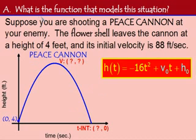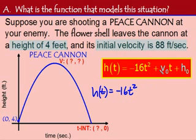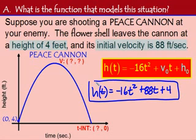Now to answer question A. What is the function that models this situation? I'm going to use my projectile motion equation and substitute my values in for v-naught and for h-naught. Reading through my problem again, I know that my initial velocity, or my v-naught, is 88 feet per second. And I know my initial height, or my h-naught, is 4 feet. So now it's just a matter of substituting into my projectile motion equation to get my function. So h of t is equal to negative 16t squared. My v-naught, or my initial velocity, is 88 feet per second. So I'm going to multiply that times t, leaving me with plus 88t, and I'm going to add my initial height, which in this case is 4 feet. So I'm going to add 4. So this is the function that models this particular situation. Pretty easy, huh?